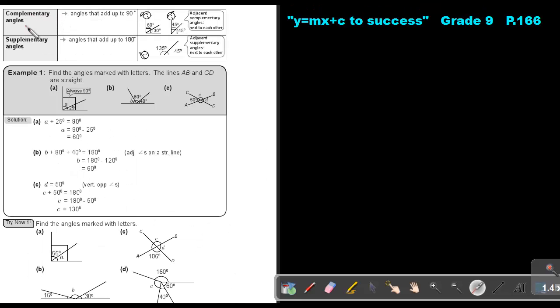What is complementary angles? Angles that add up to 90 degrees. So this angle plus this angle, they will be complementary. This angle plus this angle will be 90. So this is complementary angles. Adjacent complementary angles is next to each other.